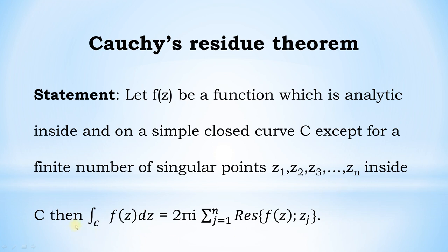...zn inside C. Then the integral over C of f of z dz equals 2πi into the summation of the residue of f of z at z_j, where j equals 1 to n.